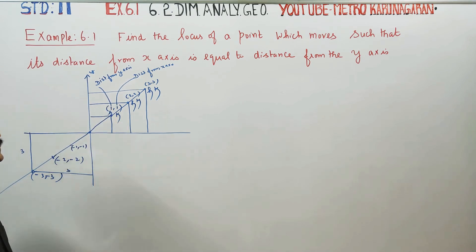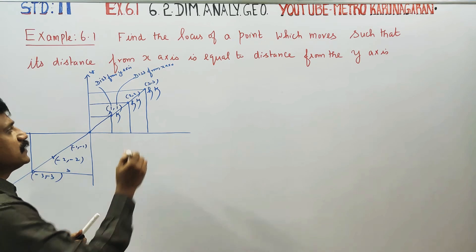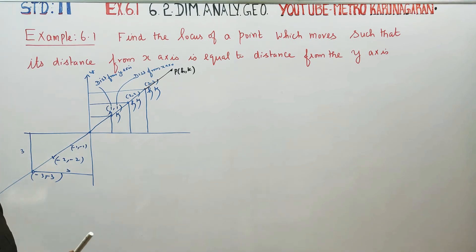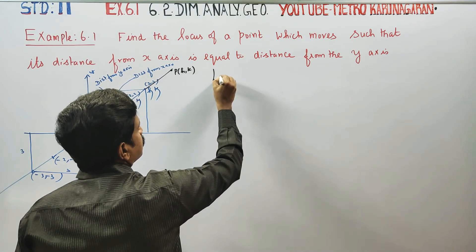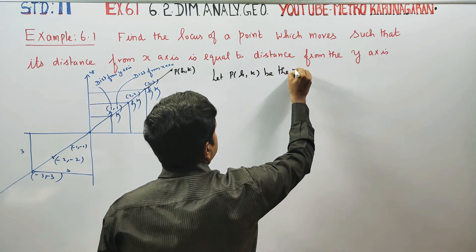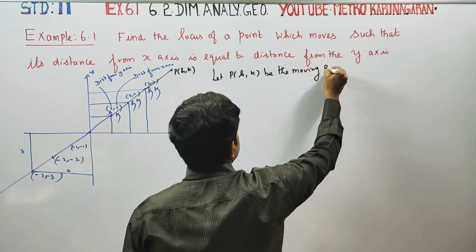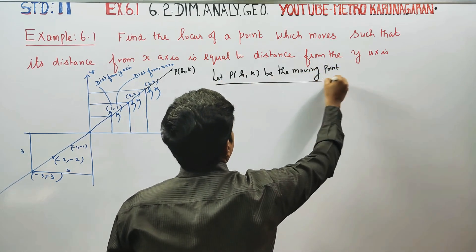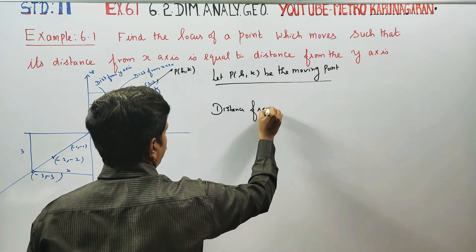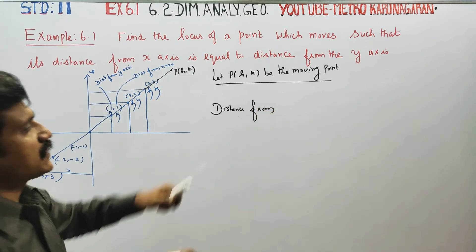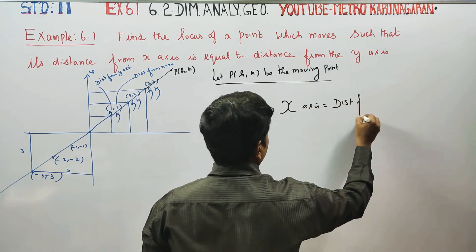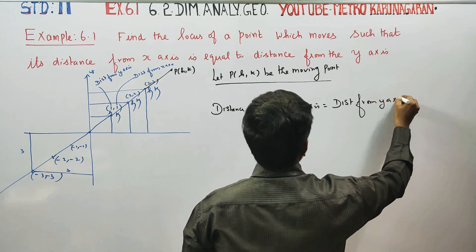The main sum: let P(h, k) be the moving point. Distance from x-axis is equal to distance from y-axis — that is the information we need to use.